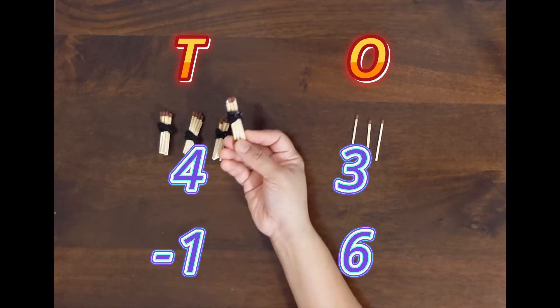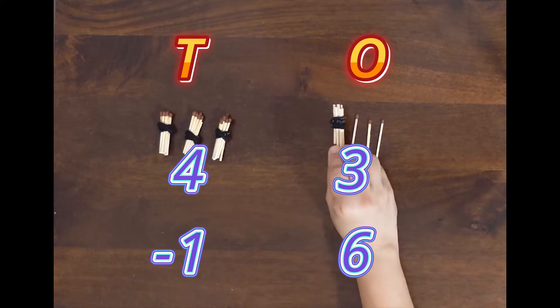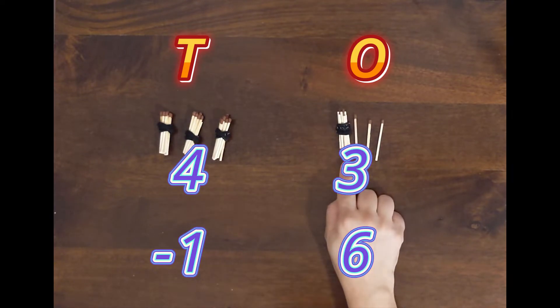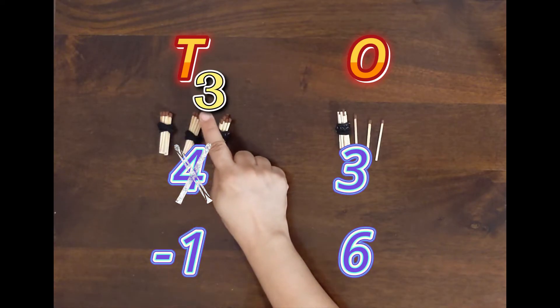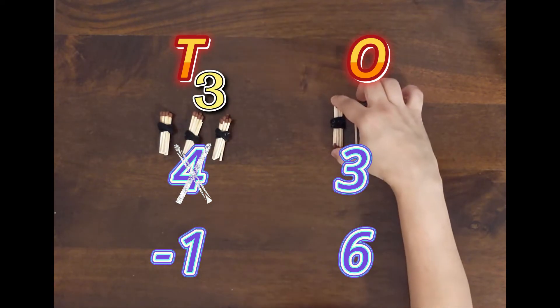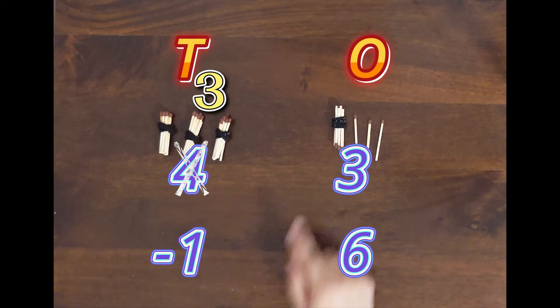But tens can only give us bundle. Tens cannot give me loose sticks, so it will give me complete 1 bundle. So this is the reason, children, why we cut 4 and write down 3, because we are taking 1 tens from the tens part.